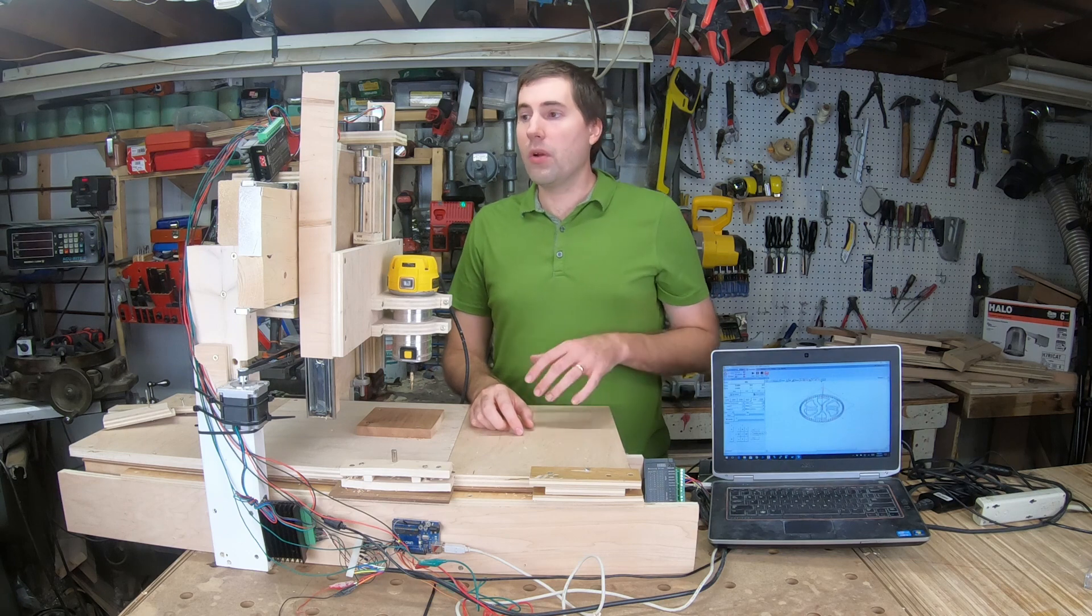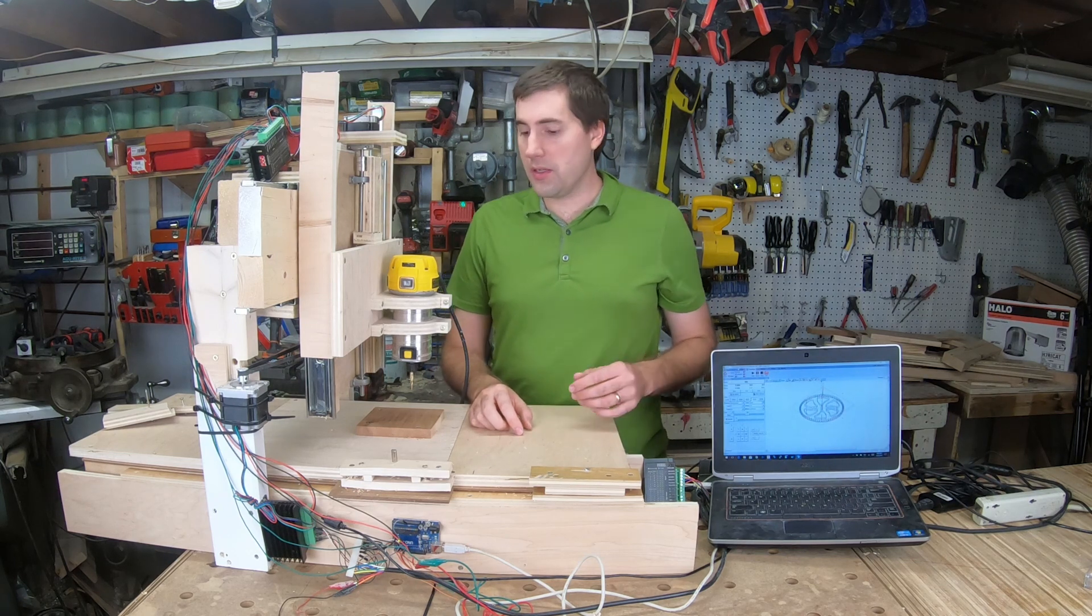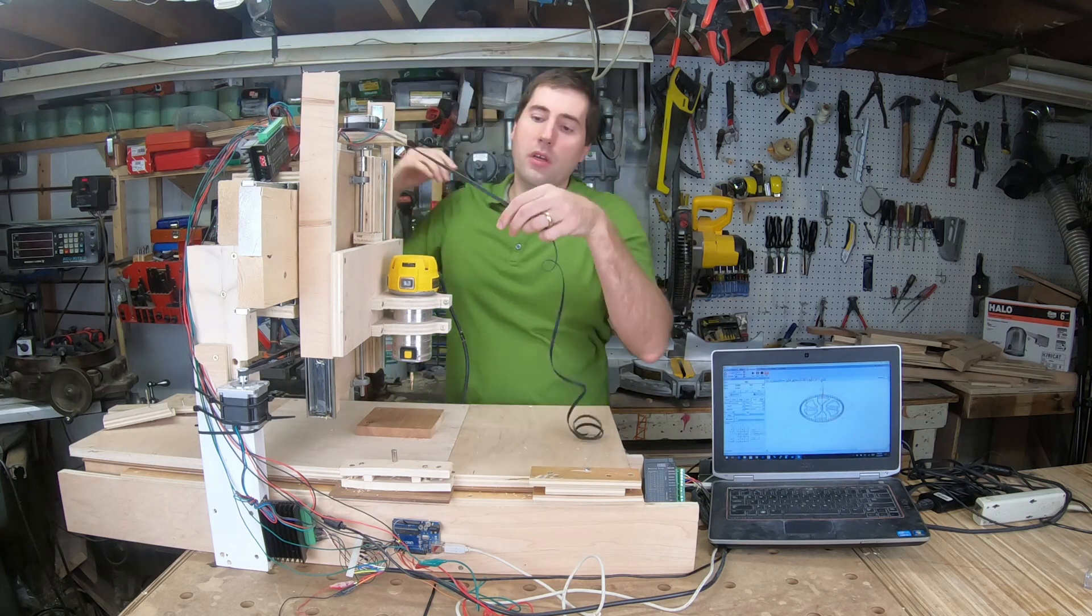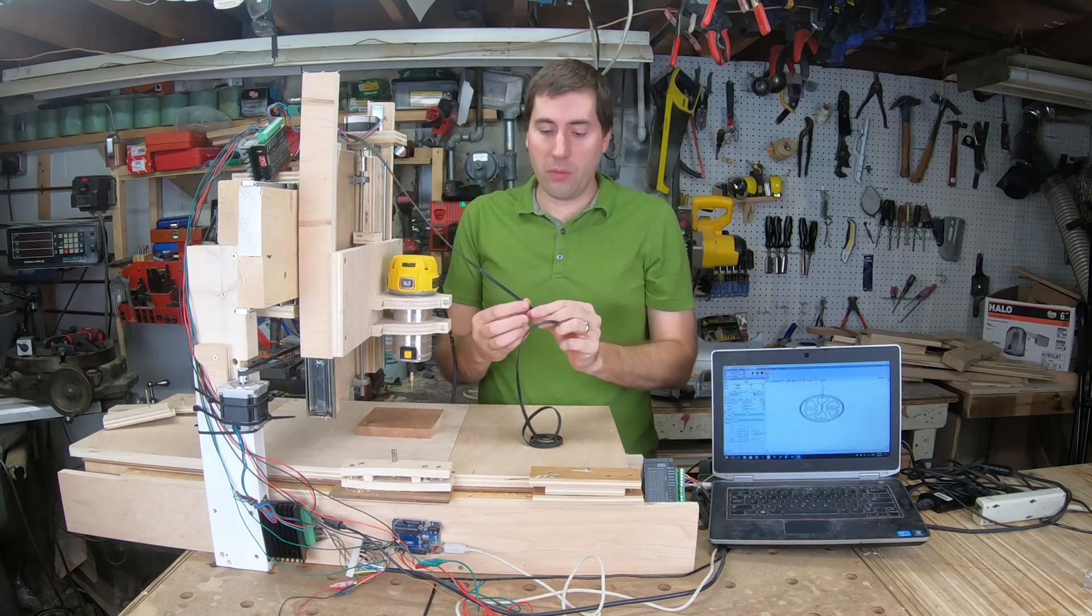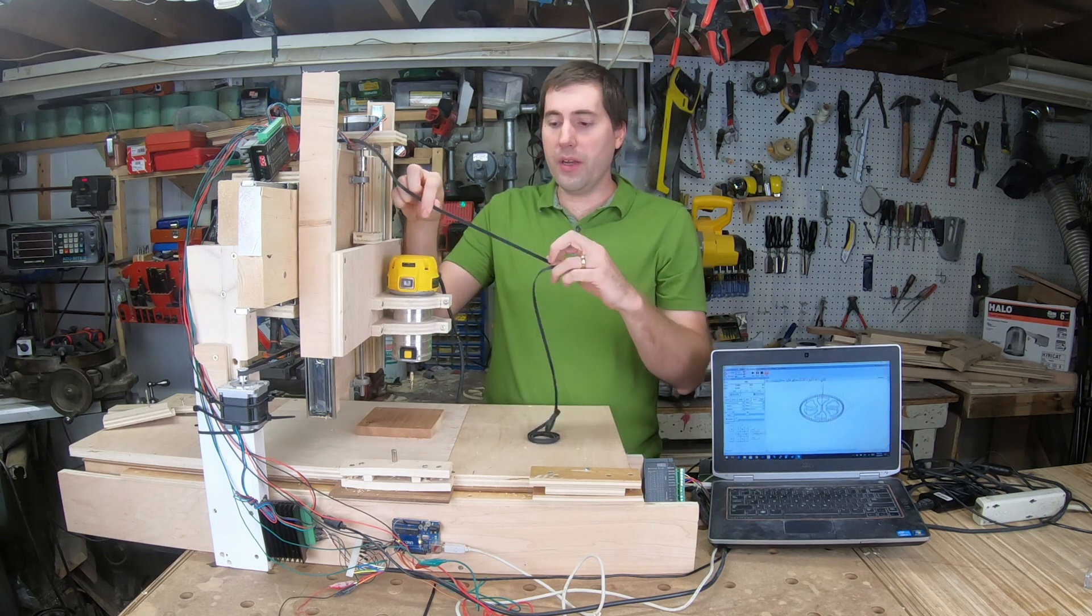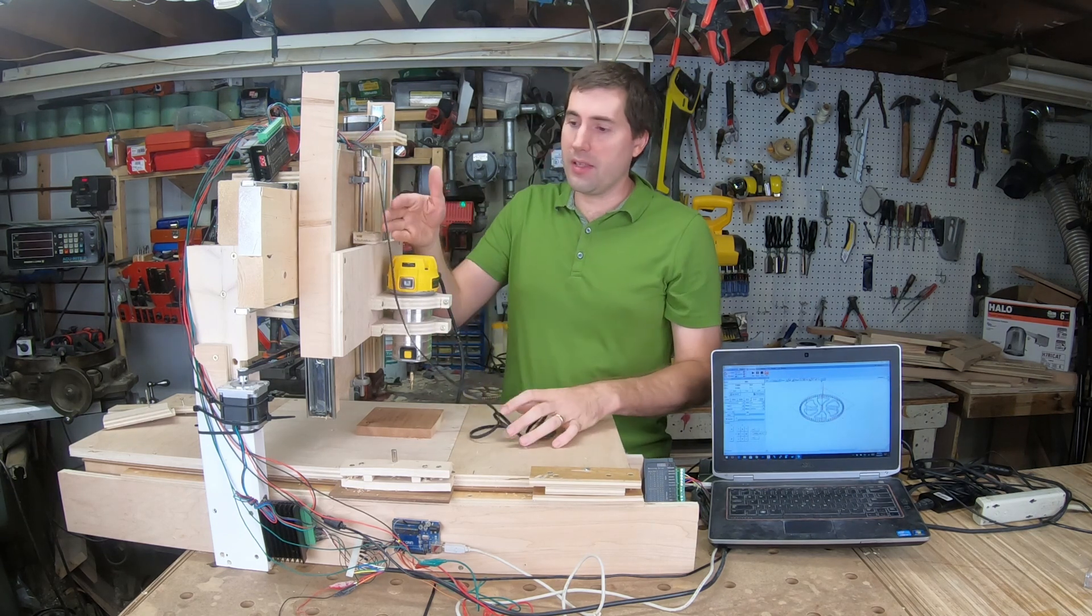For the other axes, what I chose to do was these belts here, these tooth belts. So on the end of the stepper motor, you put a little pulley that has these little teeth on it, and they mesh with this, and then you can run this between two bearings, and as this rotates, it slides this back and forth.